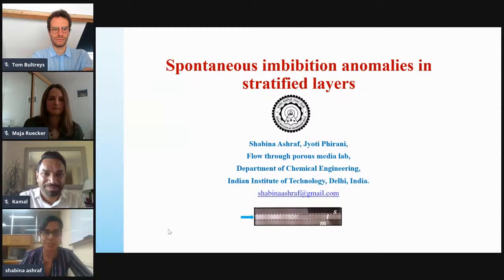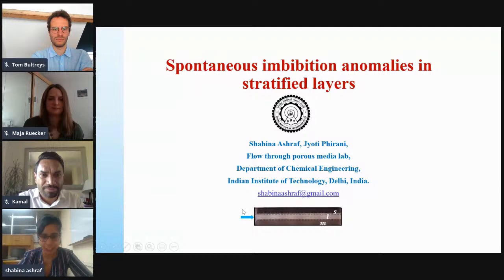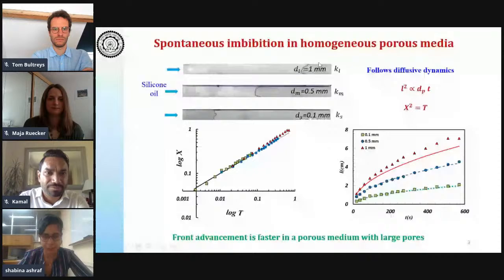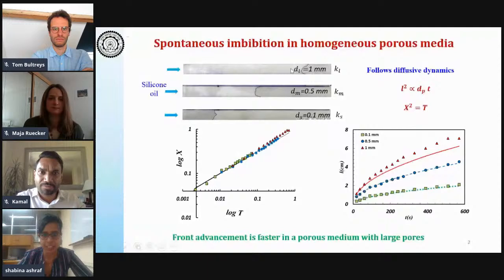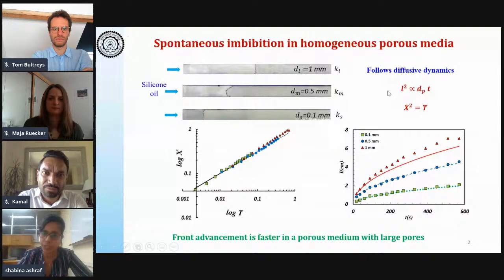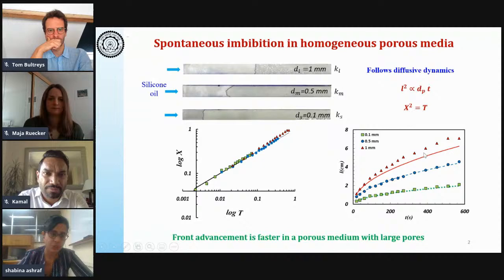Thank you, Kamaljit, for introducing me. I'm Shabina and thank you Porous Media Tea Time Talks for making me a part of this series. Today I'm going to speak on spontaneous imbibition anomalies in stratified layers, describing the capillary impregnation in layered porous media. Starting with homogeneous porous systems: when a wetting fluid is placed, capillary invasion begins, and it is well known that the larger pore will have a fluid front that travels faster compared to smaller pore systems. It also follows diffusive dynamics where the square of the impregnation length is proportional to the grain size diameter and time.